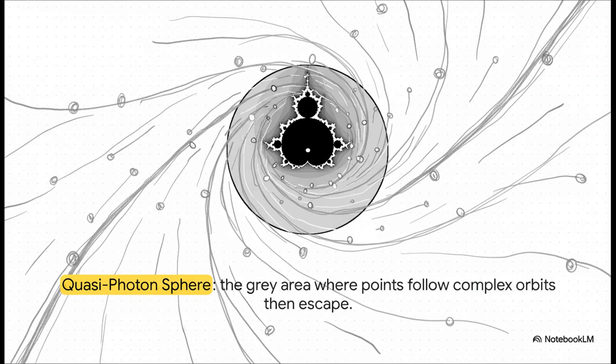And this is where the analogy just gets brilliant. That gray area you see surrounding the main M-set shape, that acts as the quasi-photon sphere. Points that start here follow these wild, complex orbits for a while before they eventually fly off. It perfectly mirrors the behavior of light trapped around a real black hole.